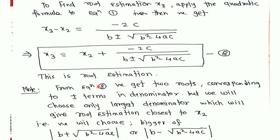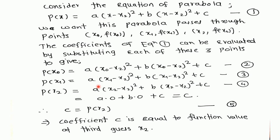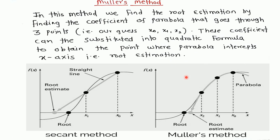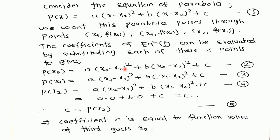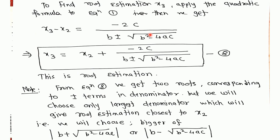Then we put this value in our first equation, that is equation number 1. See our equation, we are substituting values only and then we are solving the quadratic equation. We get x3 minus x2 is equal to this and x3 is equal to, we are taking this x2 to the right side. This is our root estimation. From equation 8 we get two roots, for this plus one we get one root and minus we get another root.